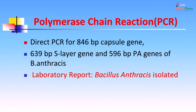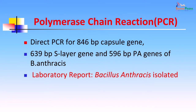The identification can also be confirmed by newer techniques like the polymerase chain reaction (PCR). With PCR, we can detect the 846 base pair capsular gene, the 639 base pair S-layer gene, or the 596 base pair protective antigen gene of Bacillus anthracis. The final laboratory report, since all these PCRs were positive, went as Bacillus anthracis isolated.